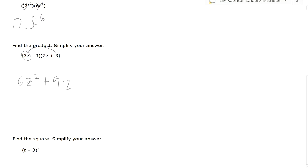And then you have minus 3 times 2C. So that's minus 6C. And then minus 3 times the other 3. So that's going to be minus 9. And then you combine like terms. So right now, 9C and minus 6C, those are like terms. So I move down whatever else does not have like terms. So 6C squared plus 3C, because those subtract to 3C, and then minus 9. And that's the answer for that product.